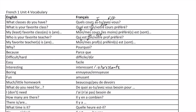Adjectives: 'Difficile.' 'Dur.' 'Facile.' 'Intéressant' — these are masculine — or 'intéressante' — feminine. 'Ennuyeux' — masculine — 'ennuyeuse' — feminine. 'Amusant' — masculine — 'amusante' — feminine.